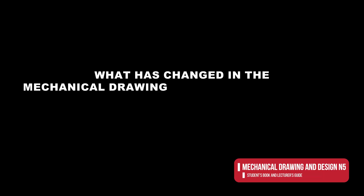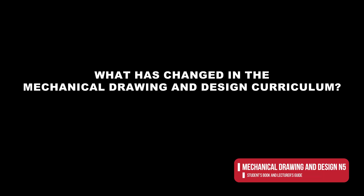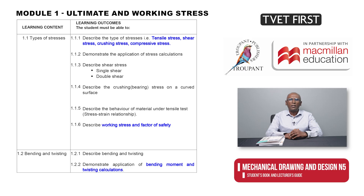What has changed in the mechanical drawing and design curriculum? Module 1 of the old curriculum has been replaced. The other topics have remained substantively the same, except that the learning outcomes are now specified in much more detail. The order of the topics has also changed. Some of the changes to the content are moderate, while others are more substantial. The former Module 1 on friction and bearings has been completely replaced by the new Module 1 on ultimate and working stress for various types of materials.